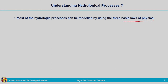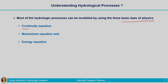Three fundamental laws of physics we will be considering in hydrological studies: those are conservation principles — conservation of mass, conservation of momentum, and conservation of energy. Conservation of mass is also known as the continuity equation, conservation of momentum is the momentum equation, and conservation of energy is the energy equation. These are the fundamental equations we will use for understanding different hydrologic processes.